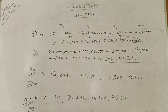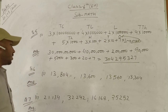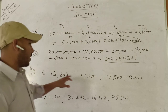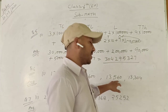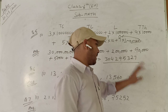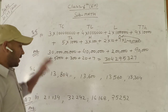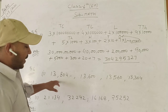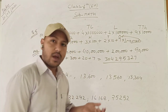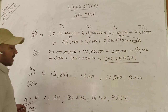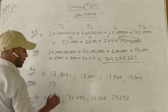Next is question number 6: Arrange the following numbers in ascending order. The numbers are: 13,804 and 13,600 and 13,560 and 13,304. First of all, we see them and find the lowest value, because ascending order means moving from the lowest to the highest value. The lowest value is 13,304.